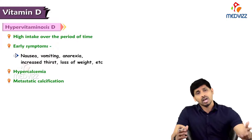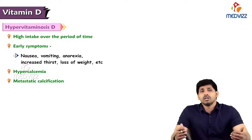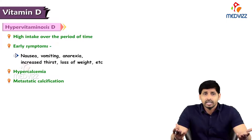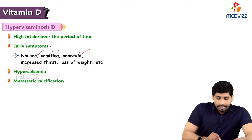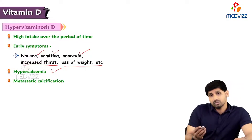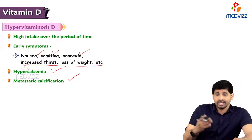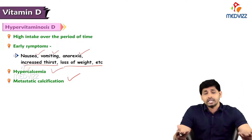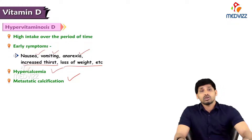Hypervitaminosis occurs when you ingest extra amounts of vitamin D over a period of time. Early symptoms include nausea, vomiting, anorexia, increased thirst, and weight loss. High vitamin D levels lead to hypercalcemia and metastatic calcification, which may result in kidney stones. These are the effects of hypervitaminosis D.